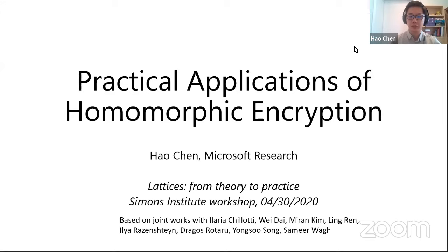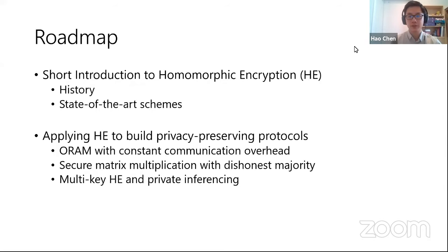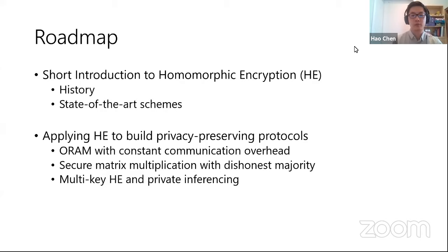This can be viewed as a continuation of the talks earlier this morning, where we use state-of-the-art homomorphic encryption schemes in practice — advancing the state-of-the-art for privacy-preserving protocols. This is based on joint works with a large set of awesome co-authors. The roadmap: first I'll give a short introduction to homomorphic encryption, then talk about different case studies. I'll give three examples: oblivious RAM, secure matrix multiplication with dishonest majority, and multi-key homomorphic encryption with private inferencing.